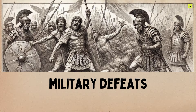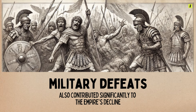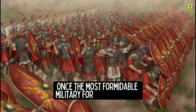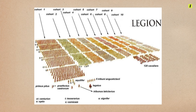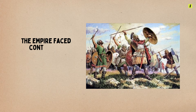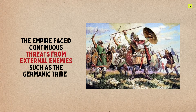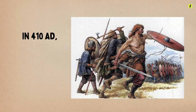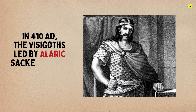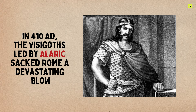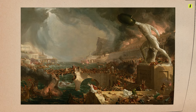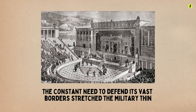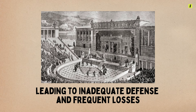Military defeats also contributed significantly to the empire's decline. The Roman legions, once the most formidable military force in the world, began to falter. The empire faced continuous threats from external enemies, such as the Germanic tribes, Huns, and Persians. In 410 AD, the Visigoths, led by Alaric, sacked Rome — a devastating blow that symbolized the empire's vulnerability. The constant need to defend its vast borders stretched the military thin, leading to inadequate defense and frequent losses.